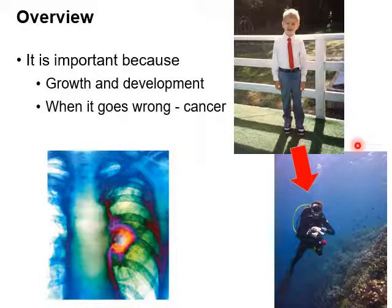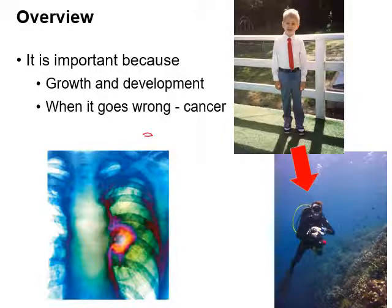Another reason why cellular reproduction is important is because it tells us more about what goes on with cancer. A lot of what makes cancer happen is irregularities in the cellular reproduction process. So by learning about cellular reproduction we'll learn more about why cancer happens. And finally, cellular reproduction kind of tells us why there are multicellular things on the planet.